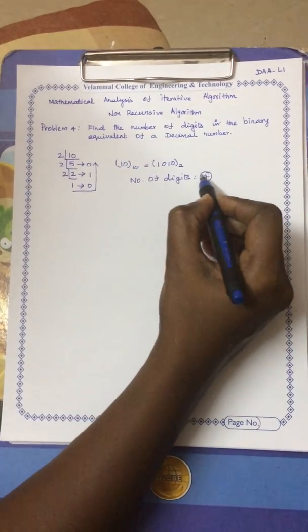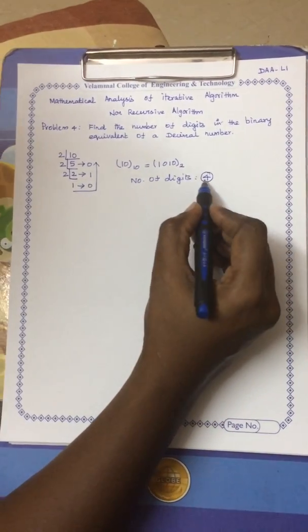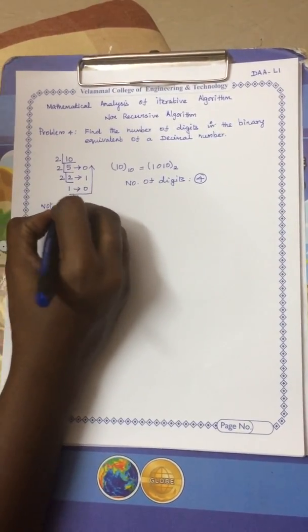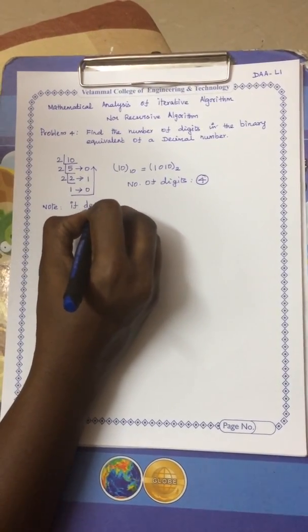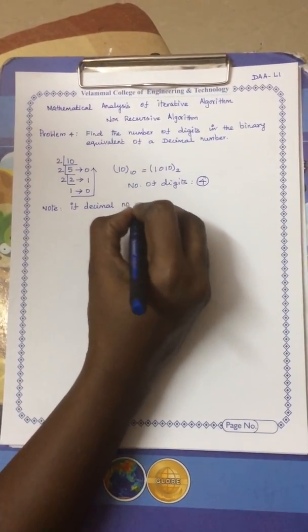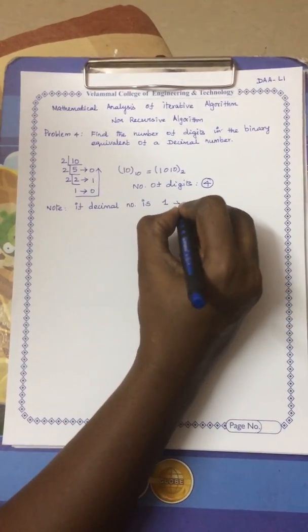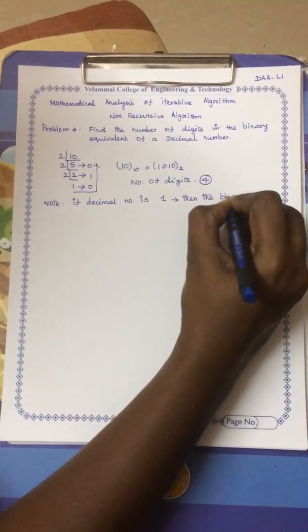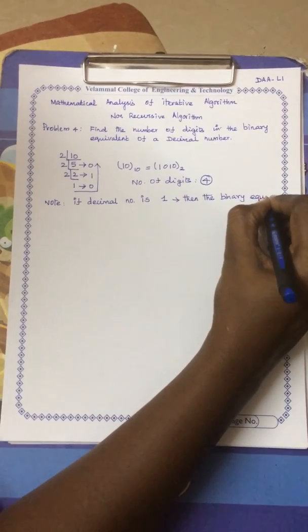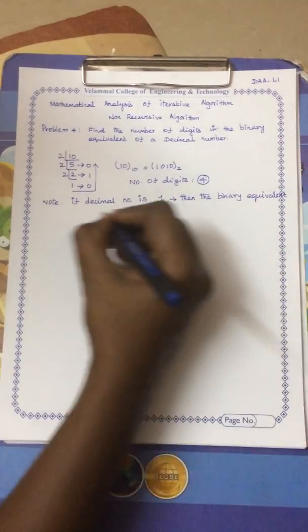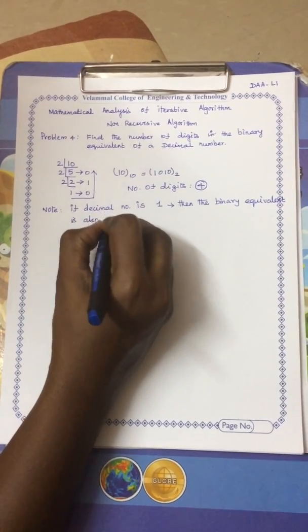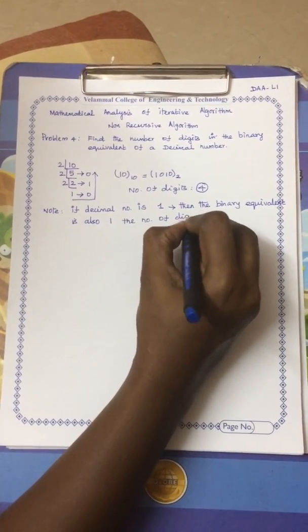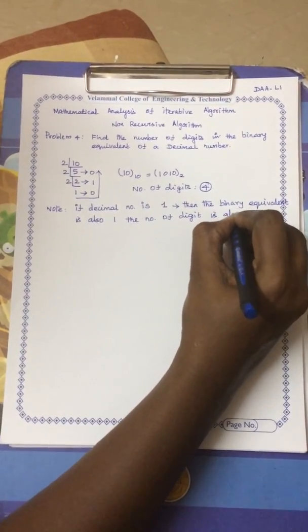This is what we want as the result. Before writing the algorithm we have to consider one special note: if the decimal number is 1, then the binary equivalent is also 1, so the number of digits is also 1.